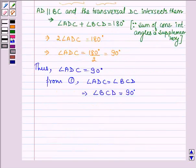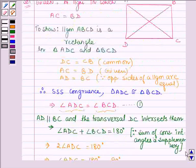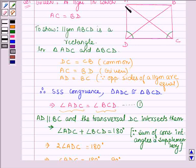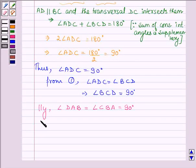Similarly, we can show that the other two angles, that is angle DAB and angle CBA, are also 90 degrees.